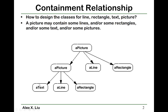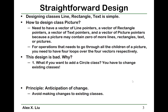This picture also contains some text, a line, and a rectangle object. So what we notice is that in this system, the objects have this containment relationship. This picture object contains a picture object, a line object, and also a rectangle object. And further, this picture object contains a text object, a line object, and a rectangle object. So how to design such a system?